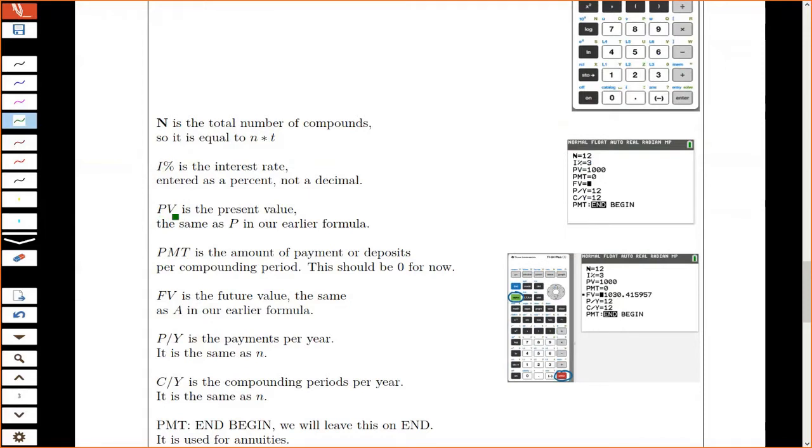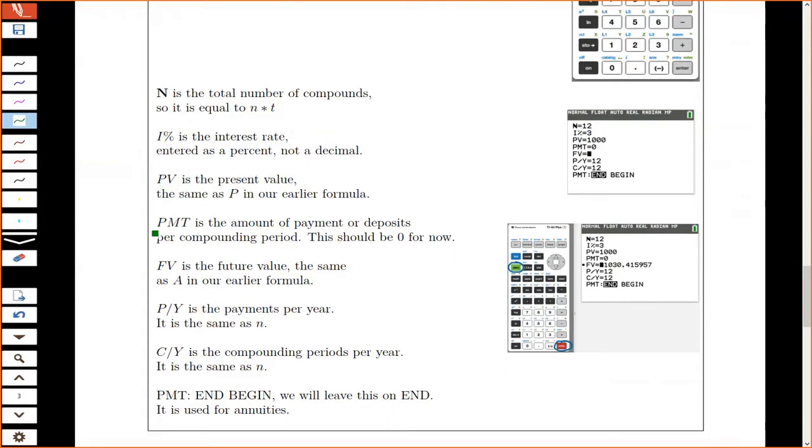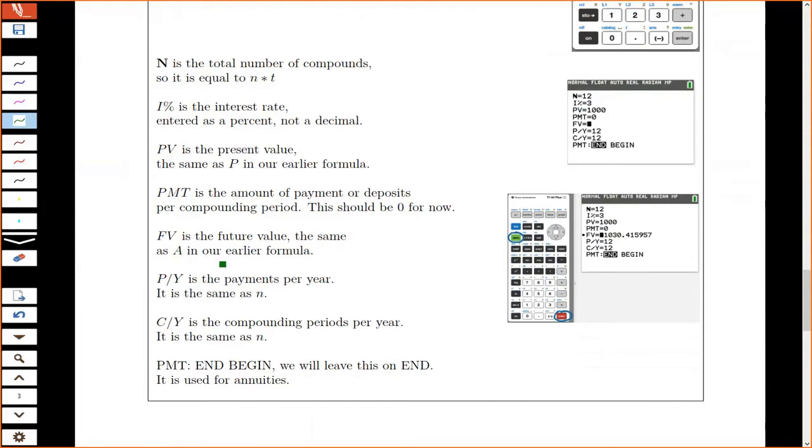It says PV instead of P for present value, instead of principal, same idea. PMT stands for payment. When we start talking about things where we're depositing payments or making monthly payments, we'll do that. But for now, that's just going to be zero. And FV is the future value. In our formulas, we used A for amount. But it's the future value, same thing.